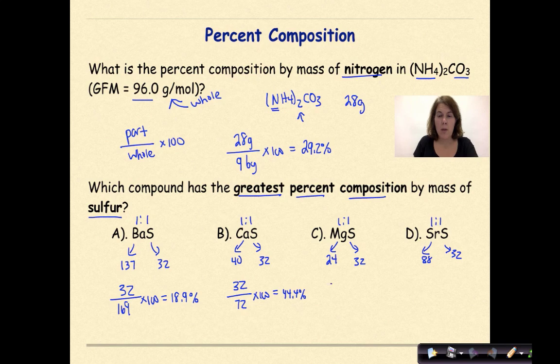Magnesium and sulfur. So 32 is going to be on top because again, percent by mass of sulfur, 32 plus 24 is going to be 56 times 100. That percentage will be 57.1%. And finally, 32 divided by 120 times 100 gives us 26.7%.